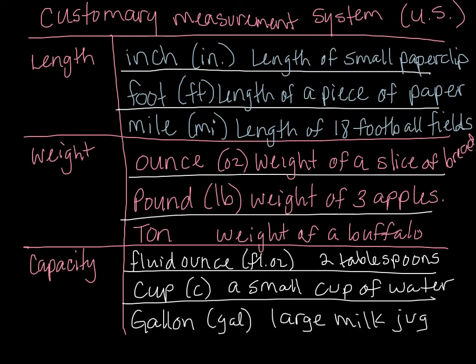And finally, a gallon, abbreviated gal. A gallon would be those large milk jugs that you buy at the store — the big ones with the little handle where you can see the milk through the plastic. That's a gallon. So these are the customary measurement systems that you want to be familiar with.